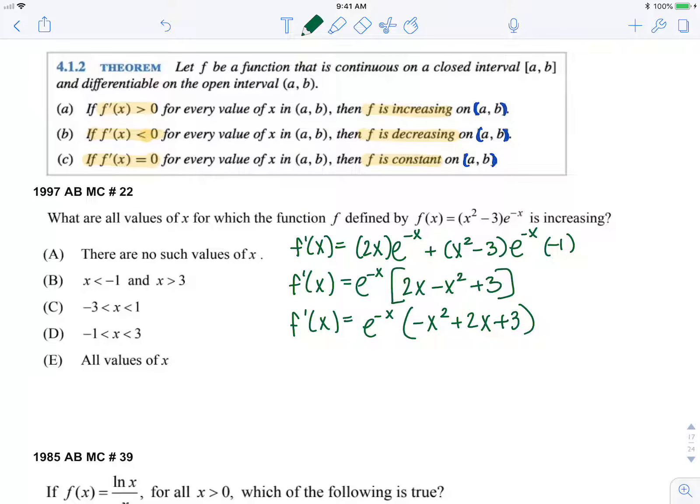I'm going to factor out that negative leading coefficient, and that's negative e to the negative x times x squared minus 2x minus 3. So f prime of x is negative 1 over e to the x times x minus 3 times x plus 1. We know f prime of x equals 0 when x equals 3 or negative 1.